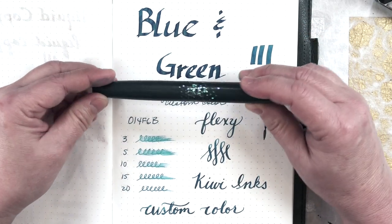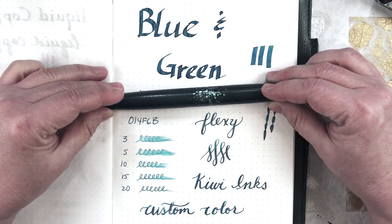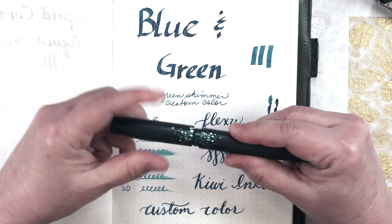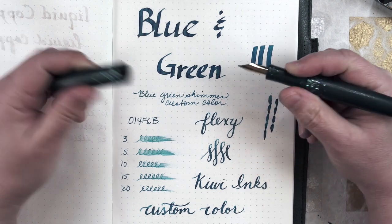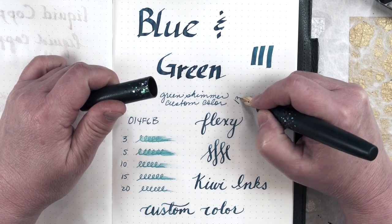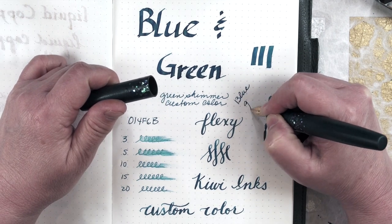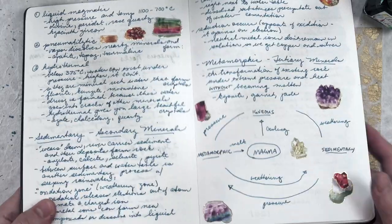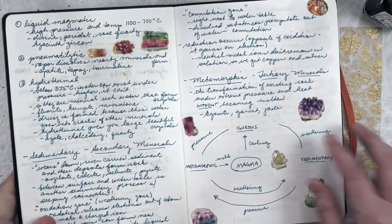I picked this to go with my Eboya Hakobune with a Bokumondo textured Ichime turquoise finish. I think it came out a nice match. Here is the custom color in everyday writing.